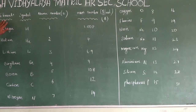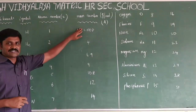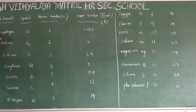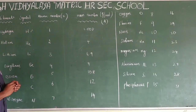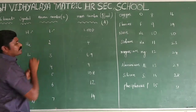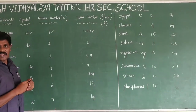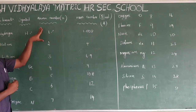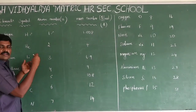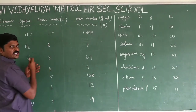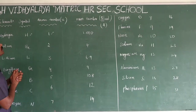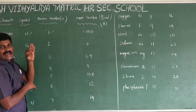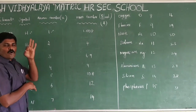Let's learn the first 30 elements: their symbols, atomic numbers, and mass numbers. The first element is Hydrogen. The atomic number of Hydrogen is 1. The atomic number is defined as the number of protons found in the nucleus.